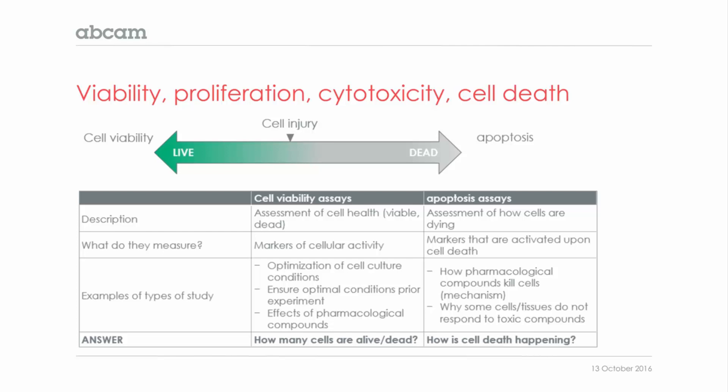Cell viability assays generally detect markers of cellular activity, and they can be used to optimize cell culture conditions and to ensure that the cells are healthy before any further study or treatment. On the other hand, apoptotic assays detect markers that are activated only upon cell death and are specifically used when we want to detect by which mechanism the cells are dying.